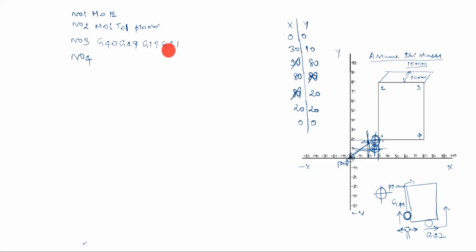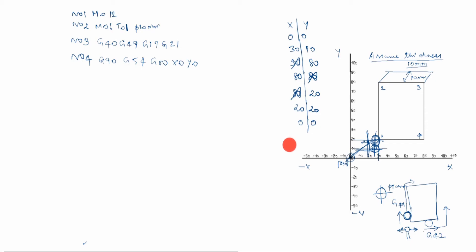N04: G90, G54, G00, X0, Y0, Z00. G90 is the absolute command — all dimensions are taken from the datum. G91 is incremental code, as covered in the last video. G54 is the work coordinate system. G00 X0 Y0 is rapid positioning to the starting point X0 Y0. We take G54 as 0,0 for this program — more on G54 in an upcoming section.